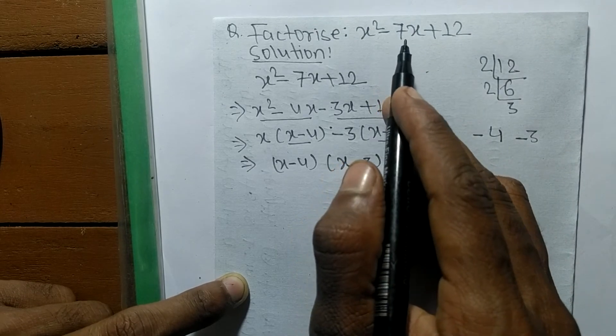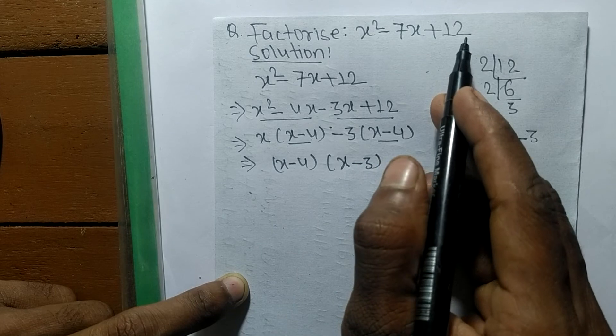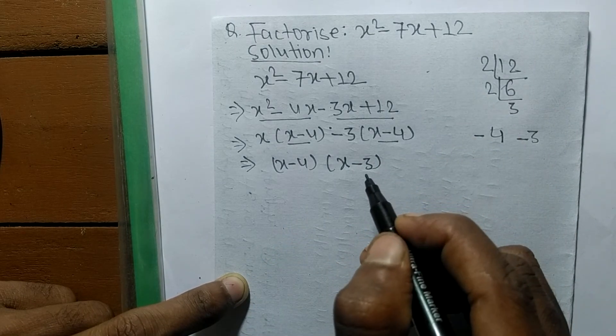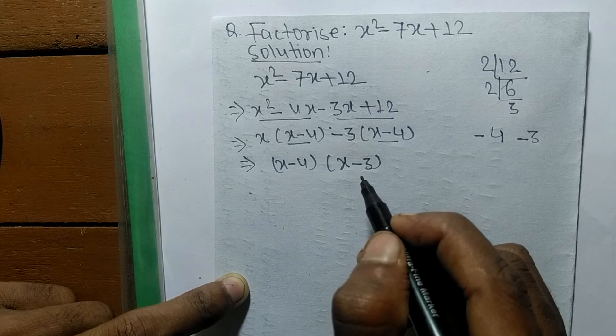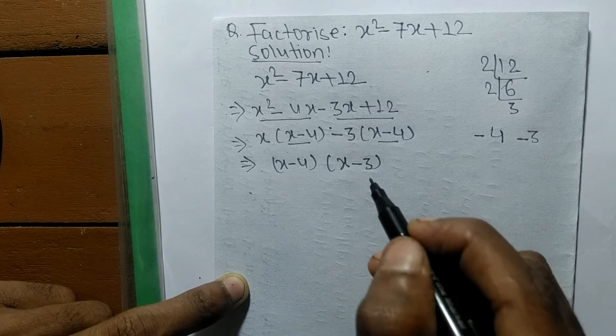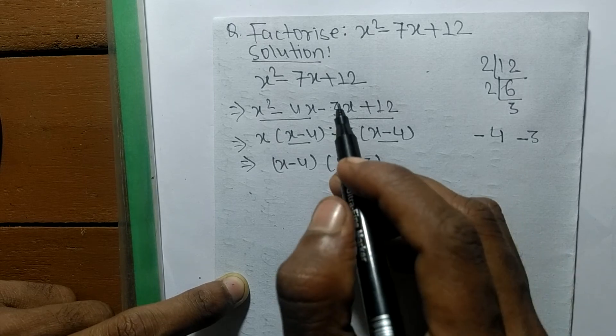The factors of x² - 7x + 12 are (x - 4)(x - 3). In this way we can solve any factorization of algebraic equations or expressions. We have to just remember: first you have to find out the prime factors of the last number.